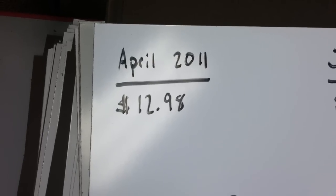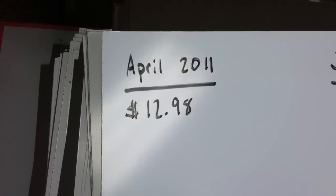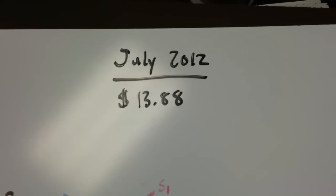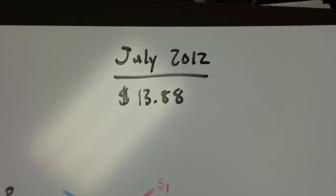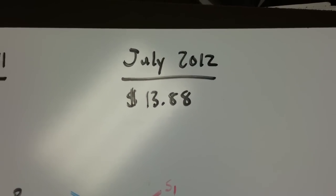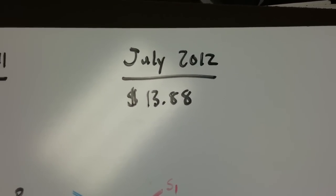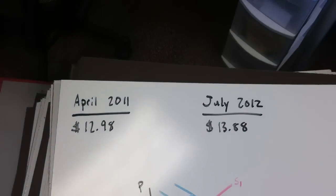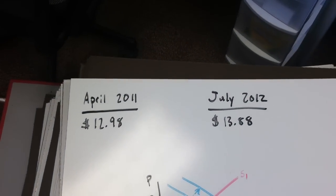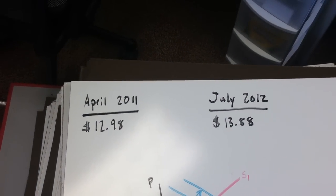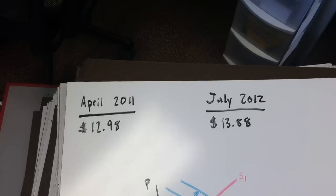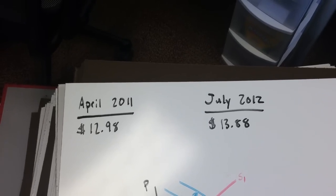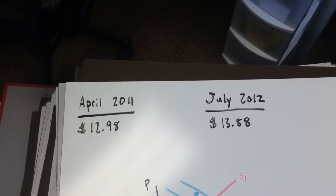Today at Home Depot the price has gone up. In July 2012, a sheet of this kind of board costs $13.88 — an increase of 90 cents. Initially I was like, man, I can't believe it's more expensive, that's not good.